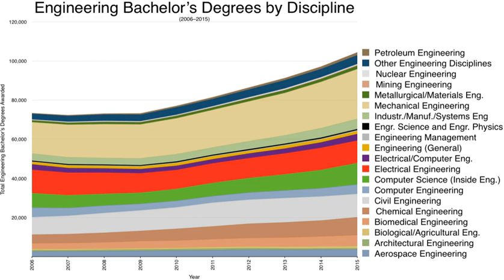In Portugal, there are two paths to study engineering: the polytechnic path (more practically oriented) and the university path (more research oriented). Polytechnic institutes award a licenciatura in engineering after three years, complemented by a mestrado after two or more additional years. Universities offer both similar programs and mestrado integrado programs that take five years — awarding a licenciatura after three years and a mestrado after the full five years.